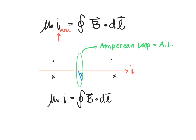Where this really comes in handy is when we have a thick cable with current flowing through it. We can then find the magnetic field inside the cable and the magnetic field outside the cable, as the distance from the center of the cable goes from zero to little r, where the radius of the cylinder is capital R.